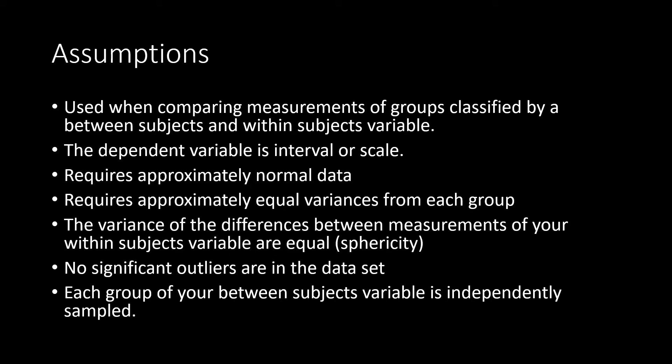For a two-way mixed model ANOVA, we're going to have the following assumptions. First, we need to be comparing measurements of groups classified by a between subjects and a within subjects variable. The dependent variable must be interval or scale. Our data needs to be approximately normal. We have roughly equal variances from each group. The variances of the differences between our different groups are approximately equal — this is also known as sphericity. There are no significant outliers in our dataset, and each group of your between subjects variable is independently sampled.